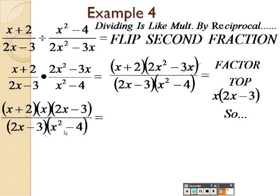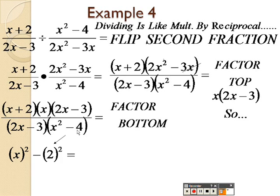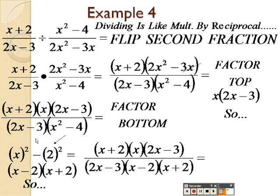The bottom can be factored because this is a difference of squares down here as well. That 4 can be written as 2 squared. So, actually, I have an x minus 2 and an x plus 2. I also still have that 2x minus 3. So, the top is all of that. And we just said we have an x minus 2, an x plus 2, and the 2x minus 3.